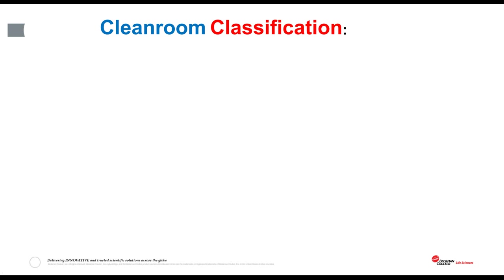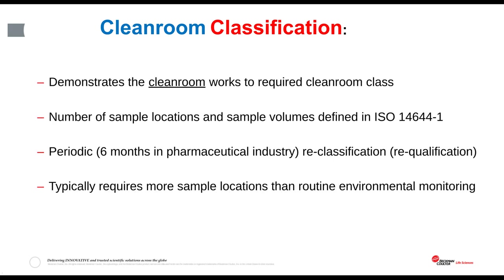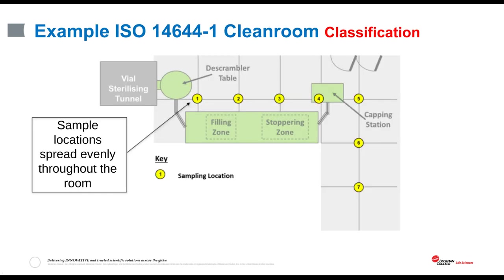Classification is very well defined and is usually carried out every 6 or 12 months. The ISO standard 14644 tells the user how to calculate the number of sample locations required, depending on the size of the clean room, and then to lay those sampling locations out on an evenly distributed grid pattern across the room. There is no requirement in the ISO standard to take samples where the product may be at risk of airborne contamination. In the example shown, following the ISO standard means there are no samples taken at areas where the product may be at risk — such as the de-scrambler table, the filling zone, the stoppering zone, or the capping station.